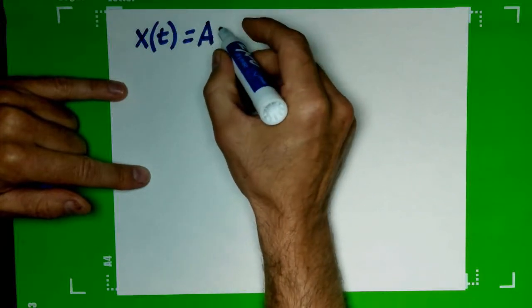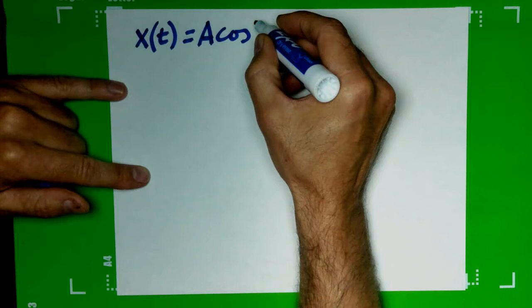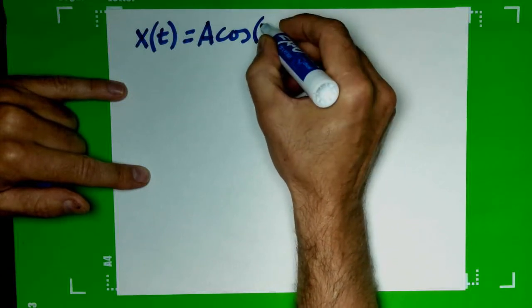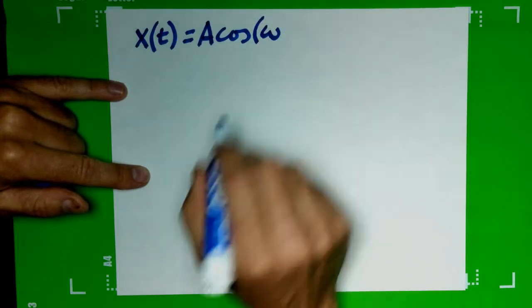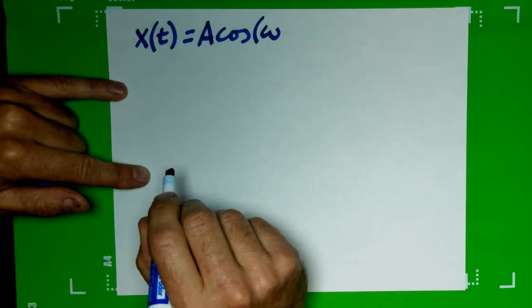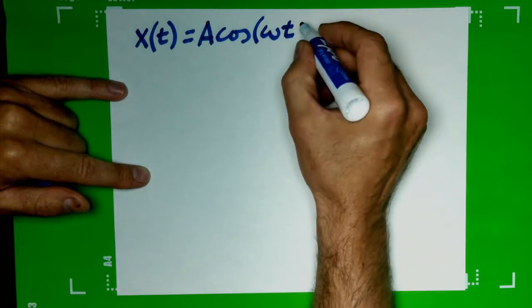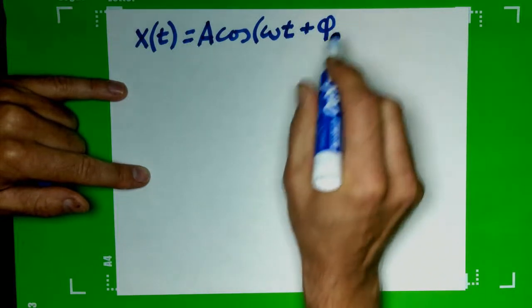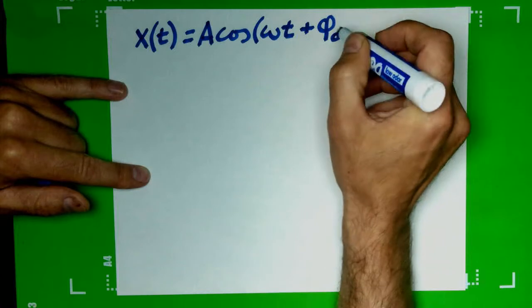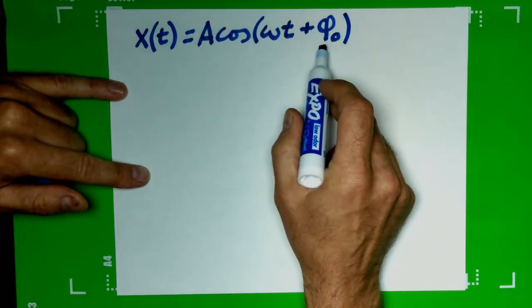And then in oscillatory function we can choose cosine and then the argument would be some frequency which we're going to use the angular frequency to make sure our units inside the cosine are radians times the time, and then plus what we call phase constant, given by the Greek letter phi with a zero subscript, and this describes where we're starting our time.